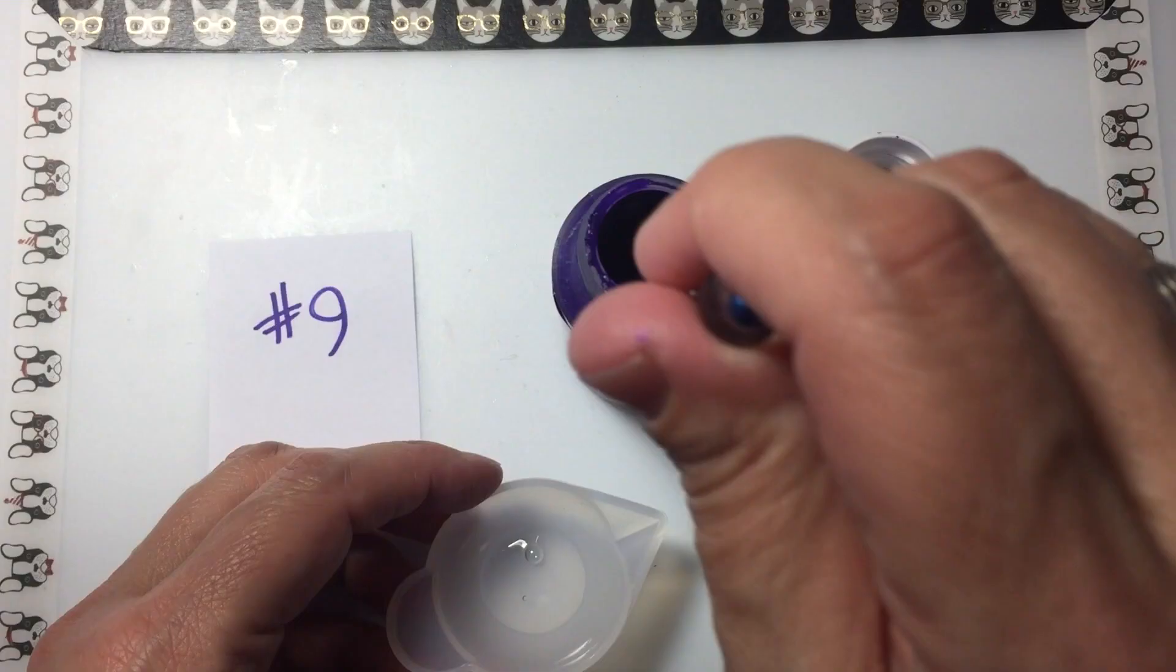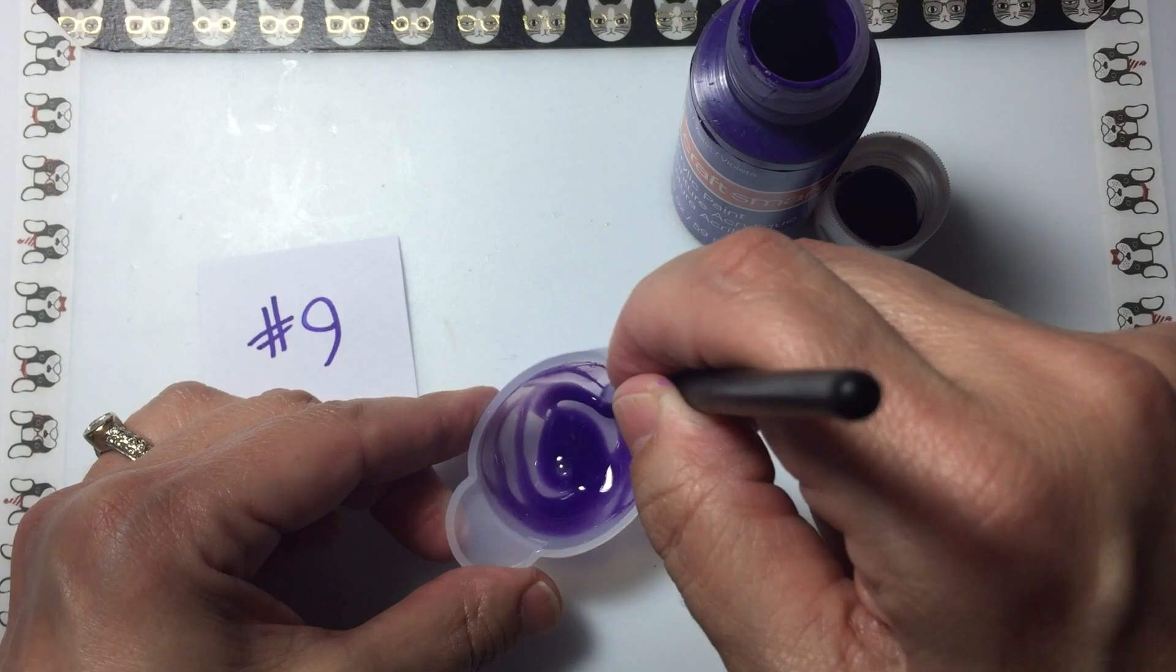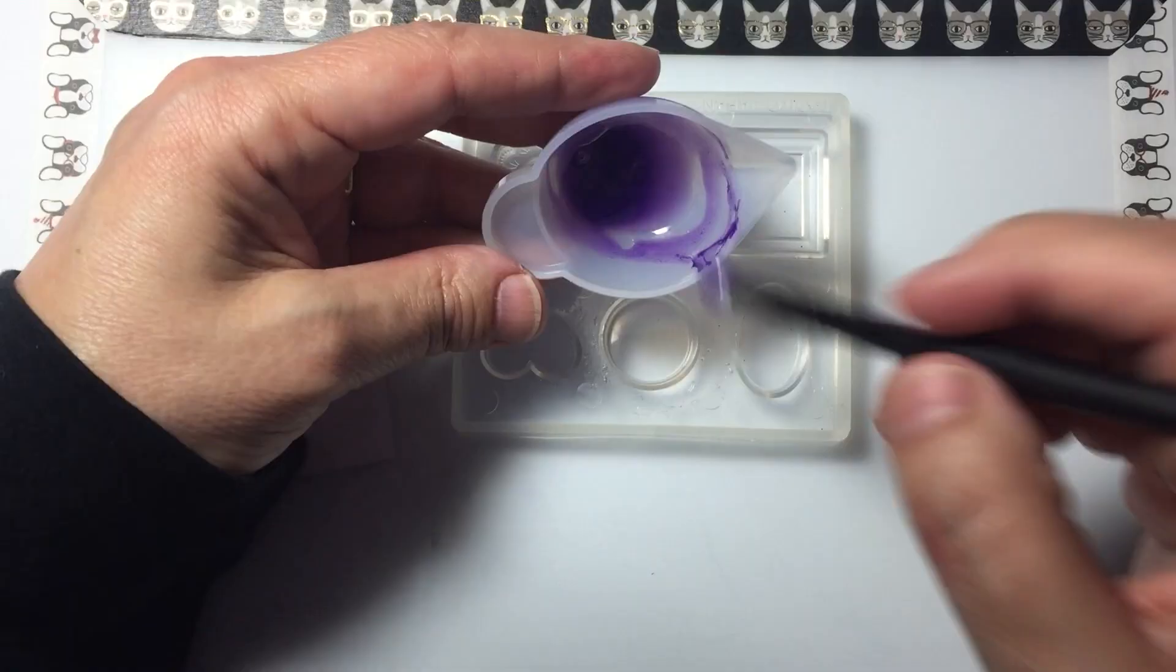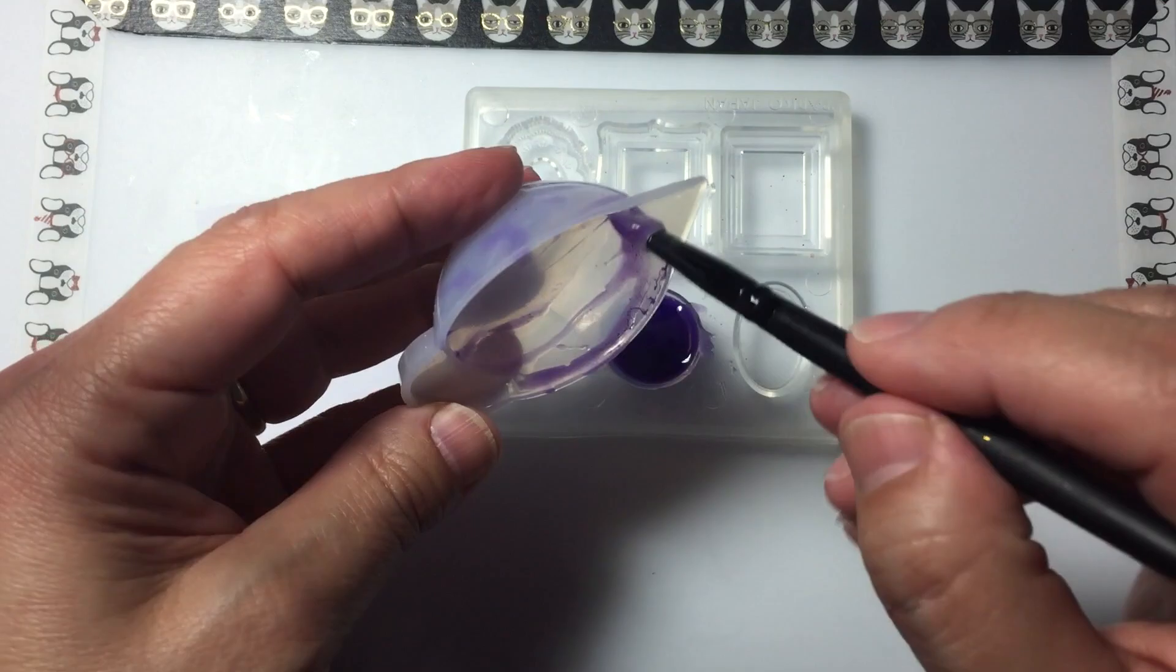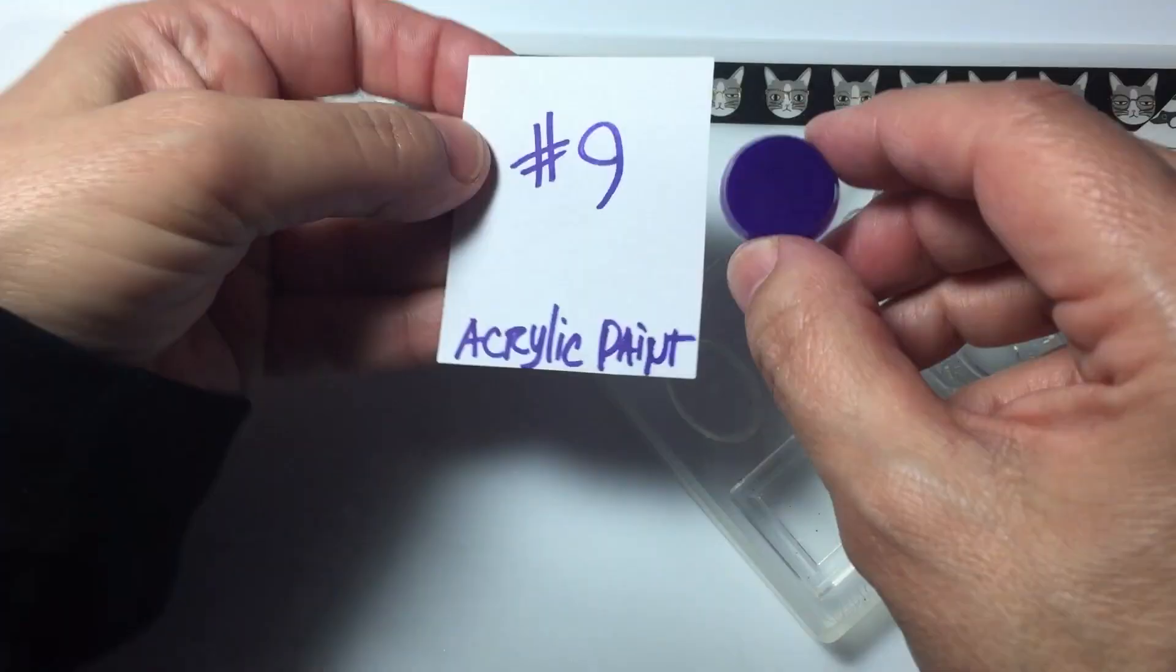The ninth way to color resin is using acrylic paints. This is another one of my favorites because you get a really nice smooth opaque look and there's so many colors of acrylic paints to choose from and they're relatively inexpensive at about 90 cents a bottle.